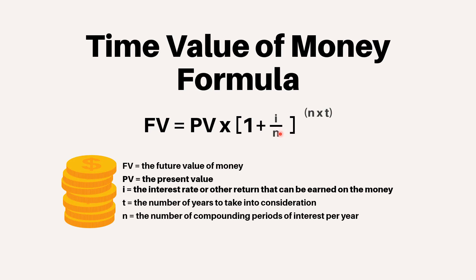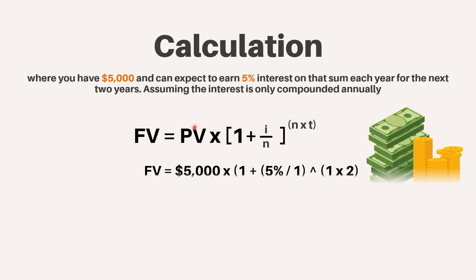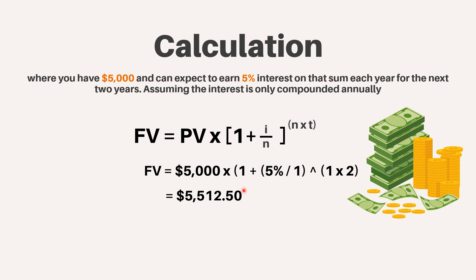N equals the number of compounding periods of interest per year. Using the formula, let's look at an example where you have $5,000 and can expect to earn 5% interest on that sum each year for the next two years. Assuming the interest is only compounded annually, the future value of your $5,000 today is calculated as follows: future value equals $5,000 multiplied by (1 plus 5% divided by 1) to the power 1 times 2, which equals $5,512.50.